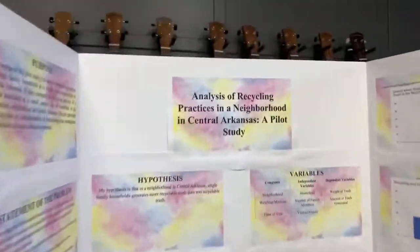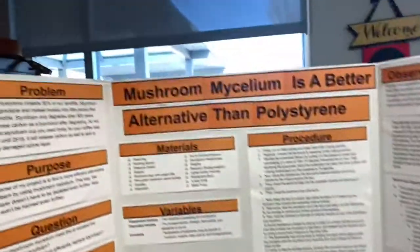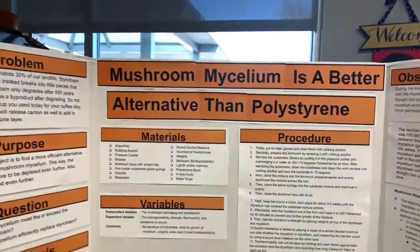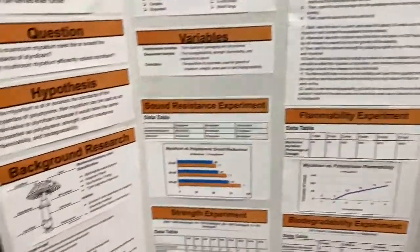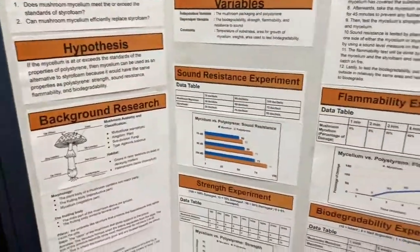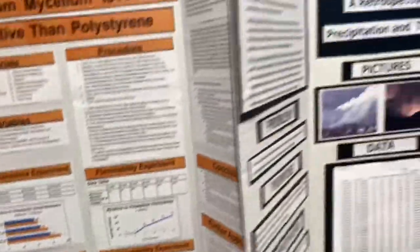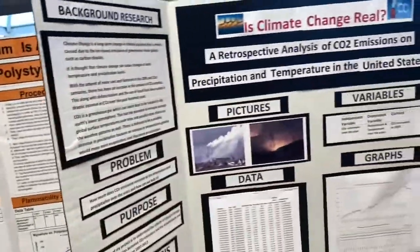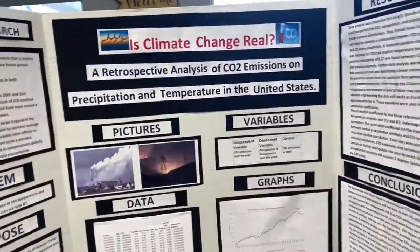Up next is 'Analysis of Recycling Practices in a Neighborhood.' Then 'Mushroom Mycelium Is a Better Alternative Than Polystyrene' — some graphs there. Here we have 'Is Climate Change Real?' with pictures, data tables, and graphs.